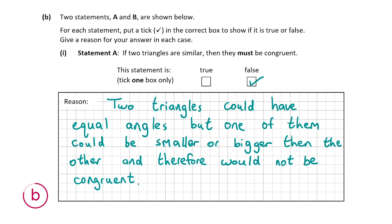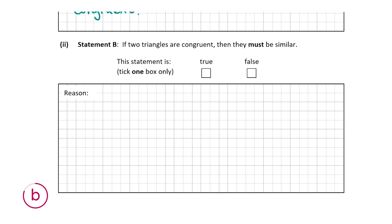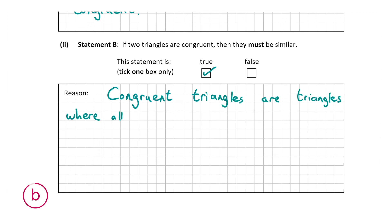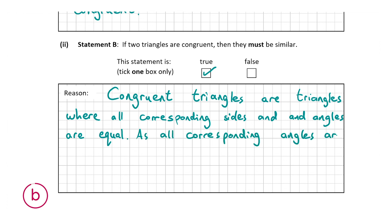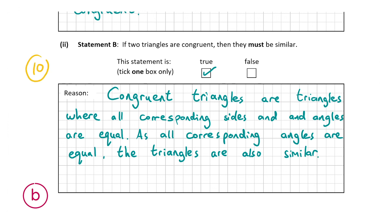Statement 2: if two triangles are congruent then they must be similar — this is true. Congruent triangles have all sides and all angles equal in both. Because all angles are always equal in congruent triangles, they are also similar. B parts 1 and 2 were worth a combined 10 marks and that was the final part of the question. Thank you very much for watching and I hope I helped.